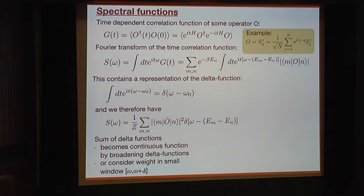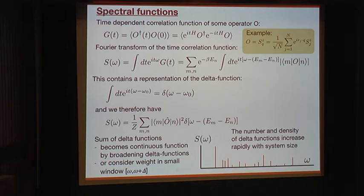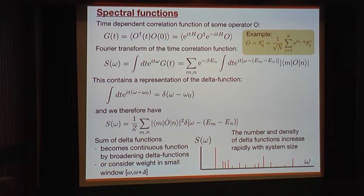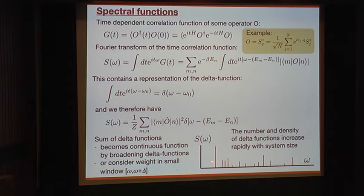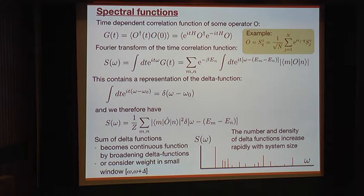In numerics, we often work with finite systems. In exact diagonalization or the Lanczos method, you can calculate spectral functions directly. But the form you get for a small system is really a sum of delta functions — each with some amplitude given by the matrix element squared. As you increase the system size, you quickly get billions of delta functions, and effectively it becomes a continuous spectrum. You can handle this by putting a little broadening on each delta function, or by collecting all weight within small frequency windows — both approaches give an essentially smooth spectrum.